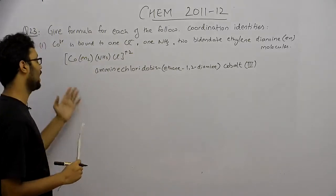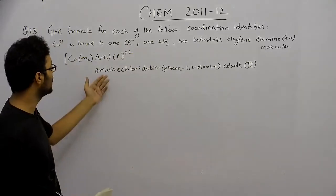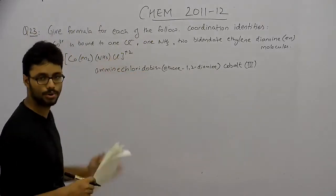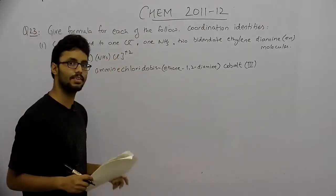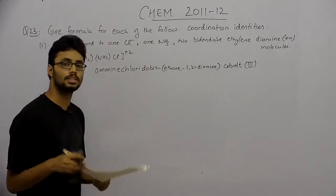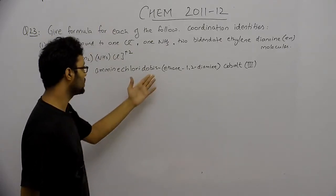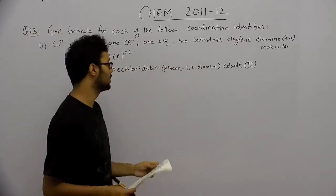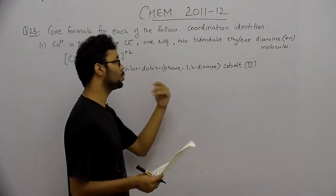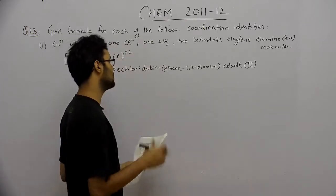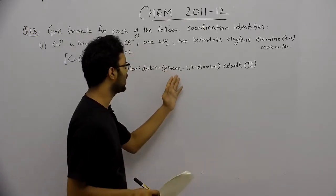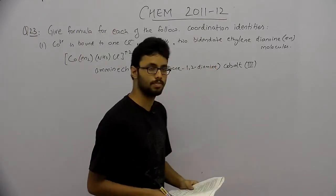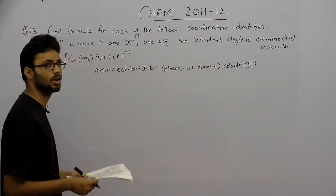The name of this coordination compound is: amine (for NH3), chlorido (for the chlorine ion, since it is negatively charged), bis (because there are two bidentate ligands — we use 'bis' instead of 'di'), ethane-1,2-diamine, cobalt(III) — because cobalt is in the plus 3 oxidation state.